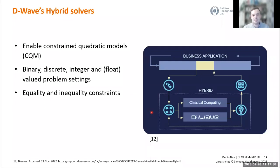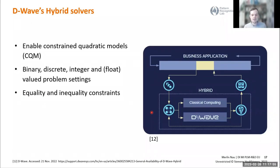The hybrid solvers offer the possibility to run Constrained Quadratic Models — CQMs. You can have not only binary variables, but also discrete integer and floating point values, and you can also introduce equality and inequality constraints.